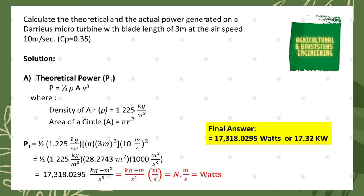First, we are going to solve the theoretical power, denoted by the symbol P. The formula is P equals one-half times the density of air times the area times the cube of the velocity. The density of air is constant at 1.225 kilograms per cubic meter. The area of the circle is calculated using the formula A = πr². We now use direct substitution since our given values are already established.